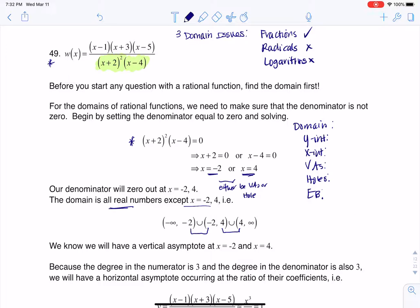So let me write down the domain here just so I have it: negative infinity to negative two, and then negative two to four, and then four to infinity. I'll come back to vertical asymptotes and holes. Let me get the intercepts right now.